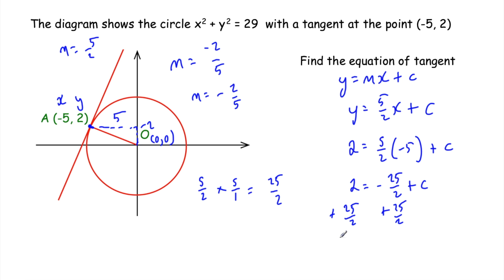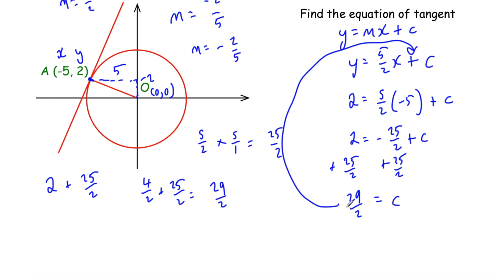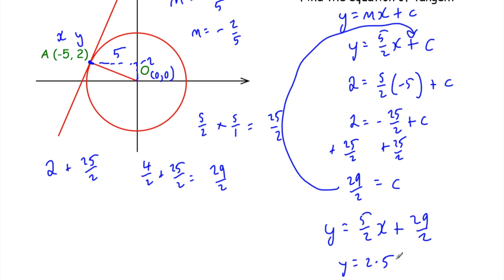Working with fractions: 2 equals 4 halves, so 4 halves plus 25 halves equals 29 halves, which is 14.5. So c equals 29 halves. Substituting back in: the equation of the tangent is y equals 5 over 2 x plus 29 halves. You could also write this as y equals 2.5x plus 14.5 — either format is fine. Well done if you got that.